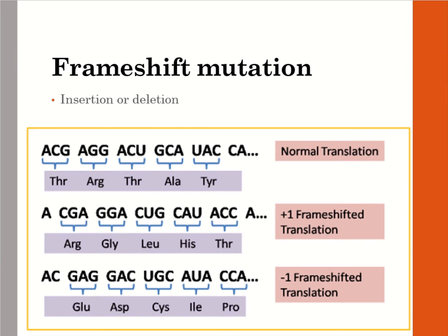Looking more closely at a frameshift mutation from insertion or deletion: up top we have normal translation, but if we shift by one, the reading frame is disrupted and the amino acids being read are shifted — so the resulting amino acids are different from the original. Similarly, if we subtract one nucleotide, the frame shifts again and we end up with different amino acids, with some nucleotides missing a partner to complete a codon. That changes the entire polypeptide chain.